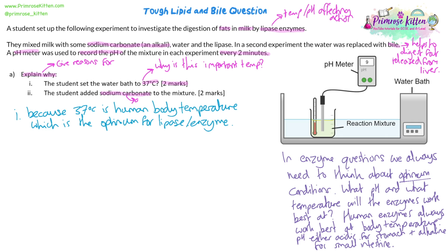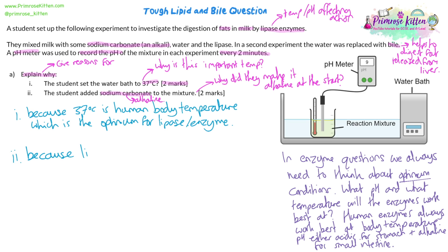Part ii is asking why we added sodium carbonate — why did the student make the mixture alkaline to start with? We know we need an alkaline optimum pH for our lipase enzyme because it works in the small intestine normally. Also, thinking about the fact that we are measuring pH — the pH is going to decrease because the fats are going to be broken down into acids. So starting alkaline also allows us to really see that change. That's also a valid answer.